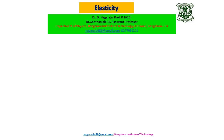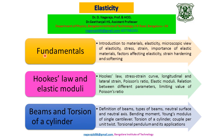If you still have any doubts or need any clarifications, please feel free to contact us. In this module, the syllabus is divided like this: first we start with fundamentals — introduction to materials, then elasticity, microscopic view of elasticity, stress, strain, importance of elastic materials, factors affecting elasticity, strain hardening and softening. Next is Hooke's law and elastic moduli with fundamental definitions and derivations. Finally, beams and torsion of a cylinder — covering definition and types of beams, bending of a beam, single cantilever, and torsional pendulum.